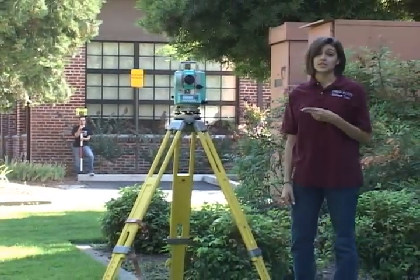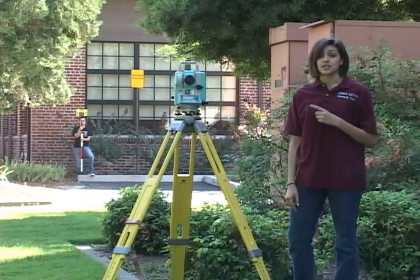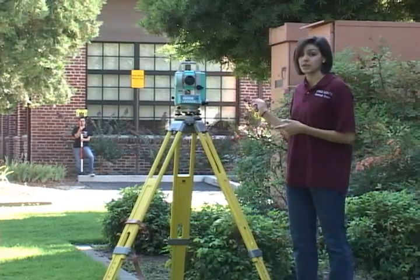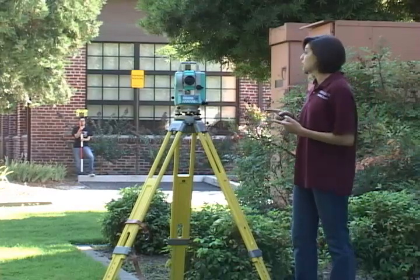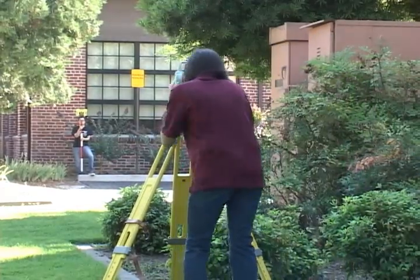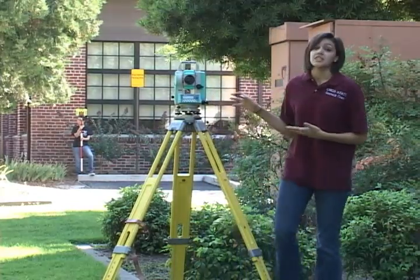There's two things that we need to know in order to get a vertical position: the vertical angle and the slope distance from the total station to the prism. Now I'm going to line up the total station on the prism and use it to take that measurement.